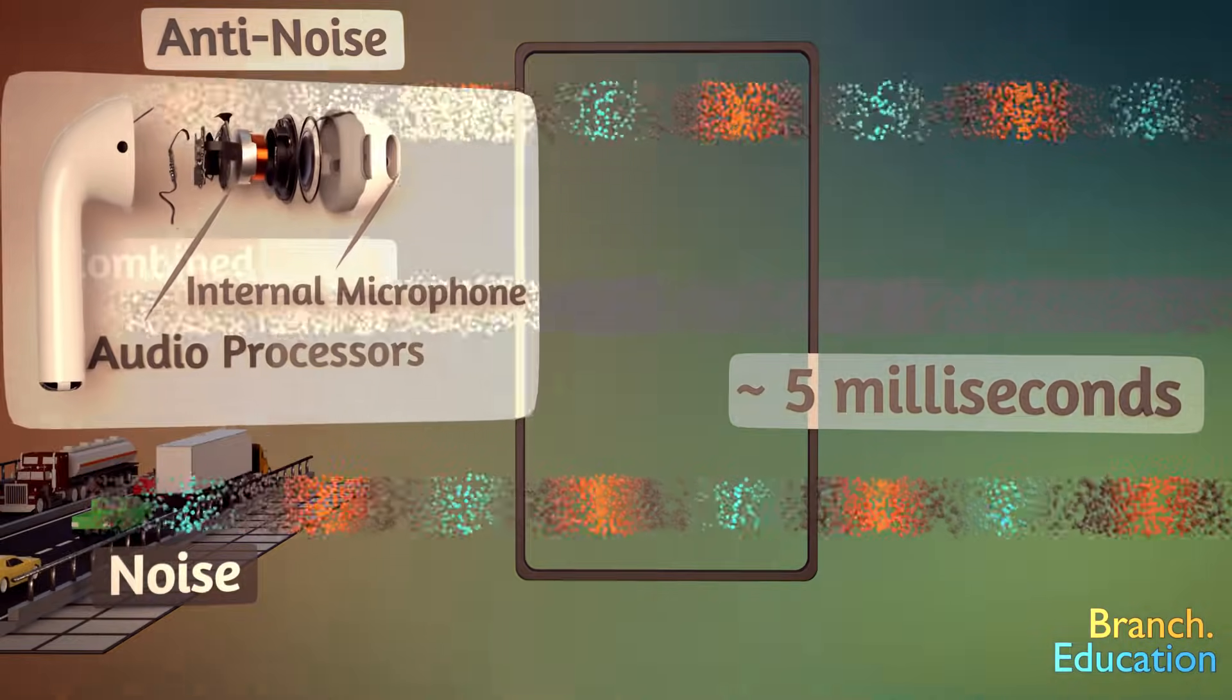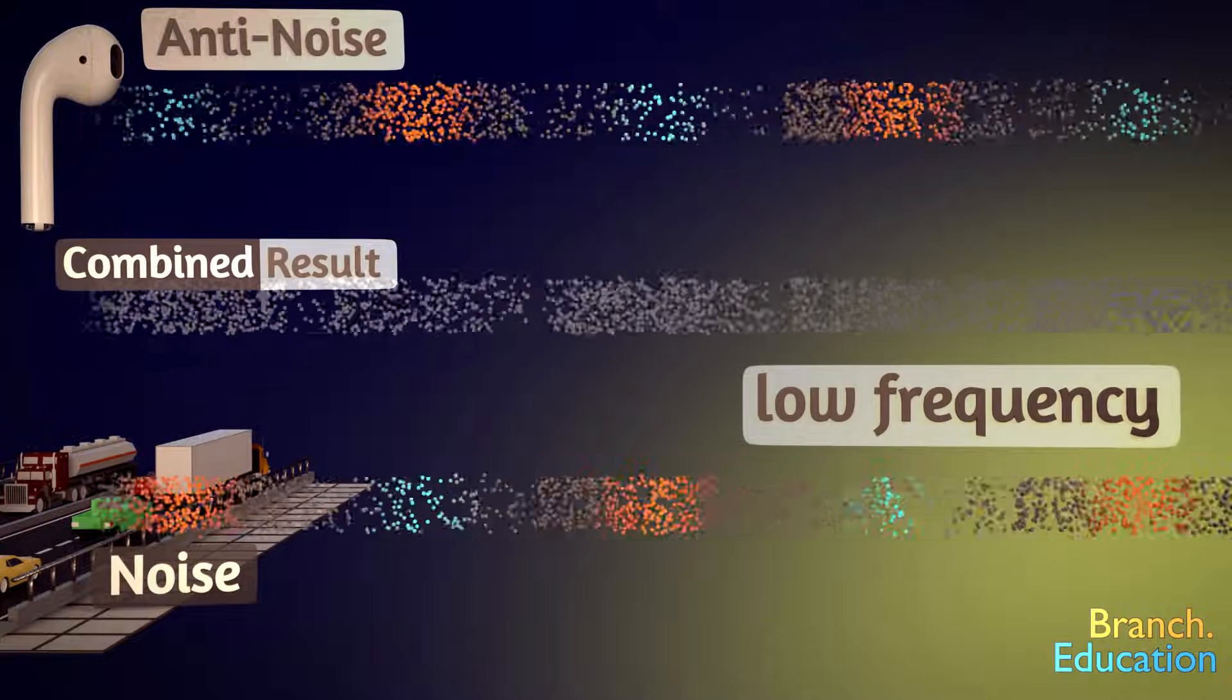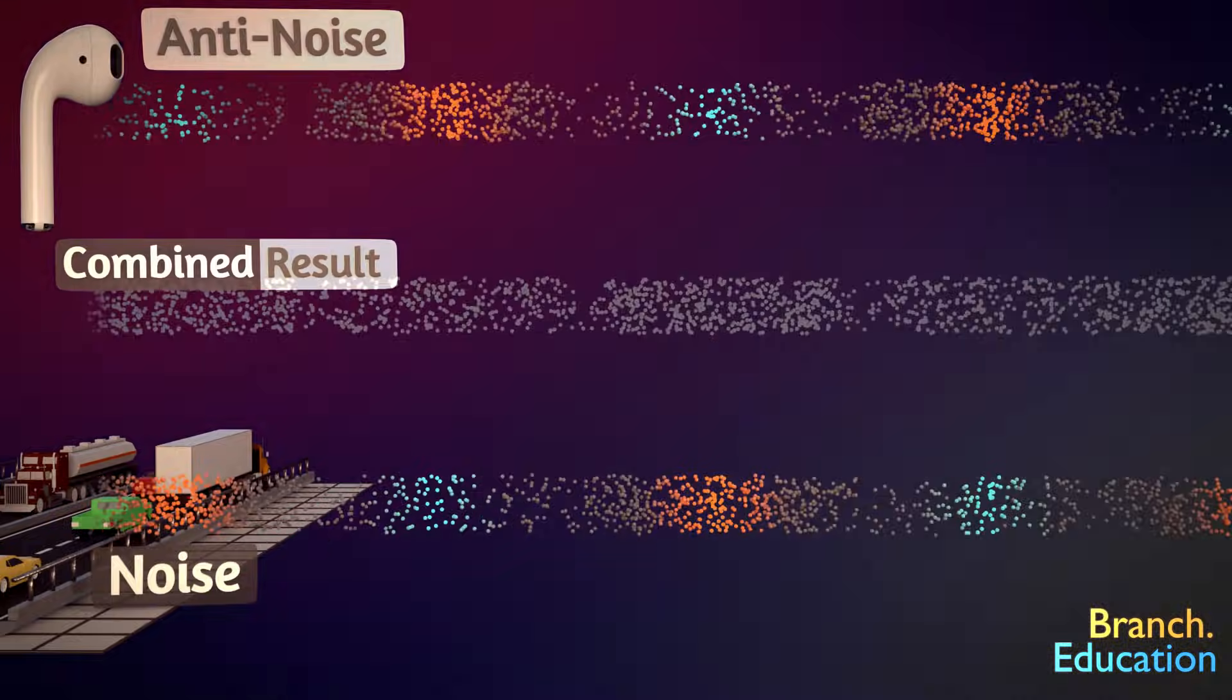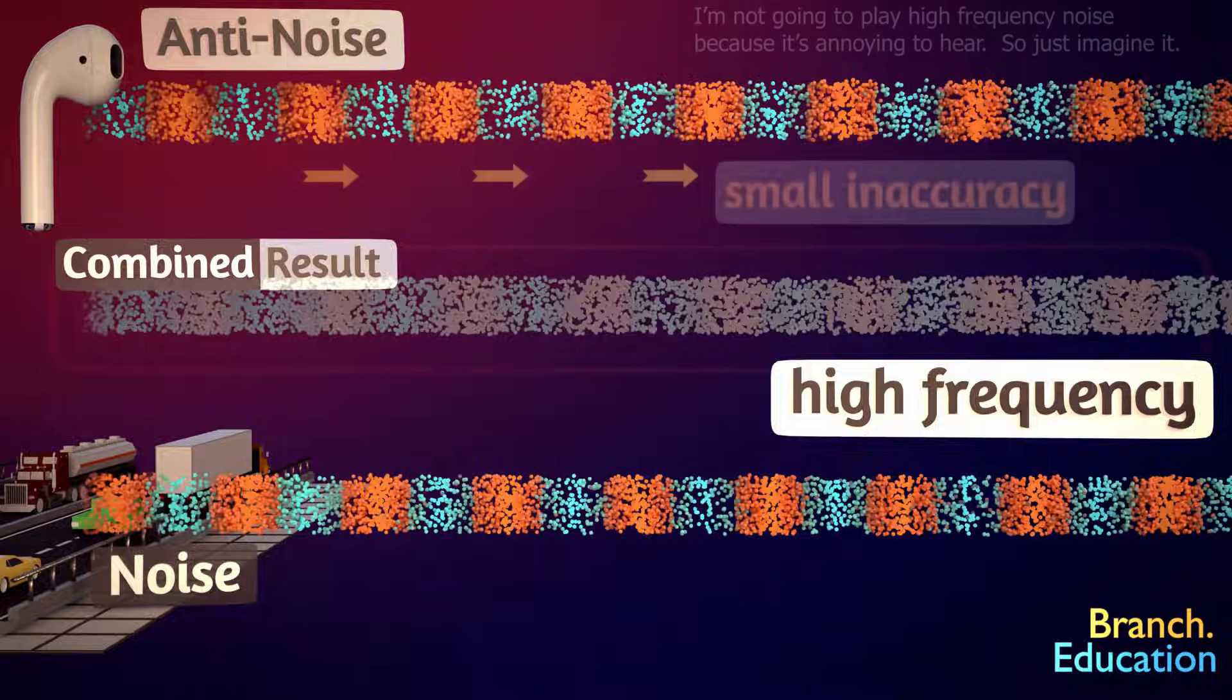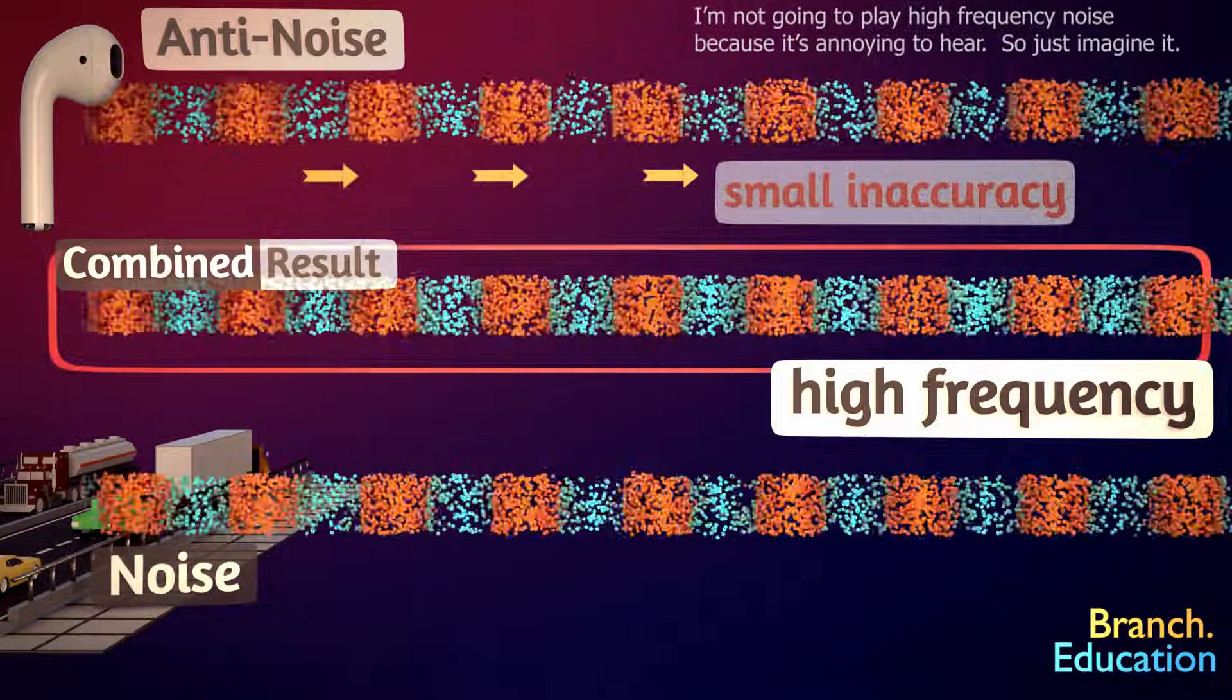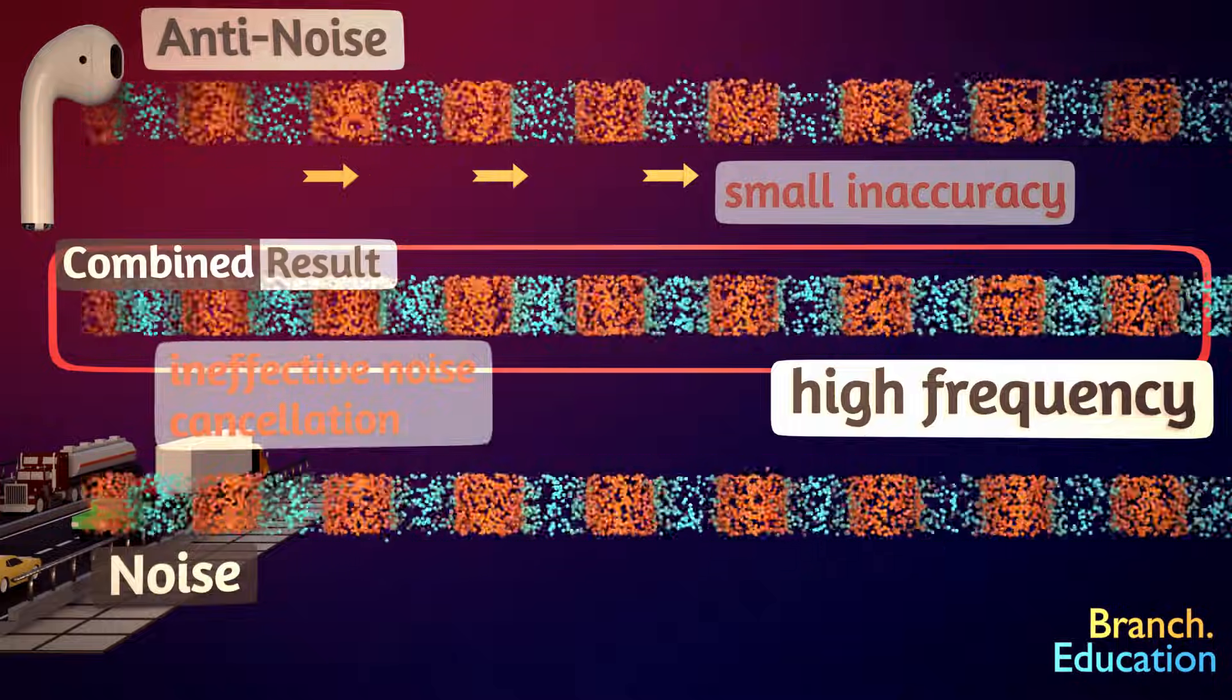Note that active noise cancellation is more effective for low-frequency repetitive noises because they have only a couple hundred peaks and troughs, or wavelengths, every second. But high-frequency noises have thousands of wavelengths per second. If there's even the smallest inaccuracy in timing the anti-sound wave with the high-frequency noise, the resulting combination between the anti-sound wave and the high-frequency noise will be ineffective.